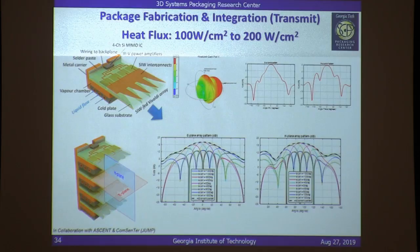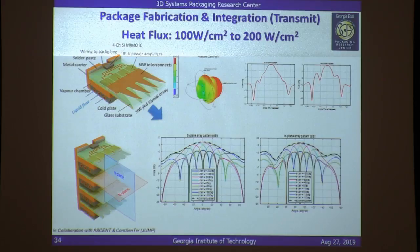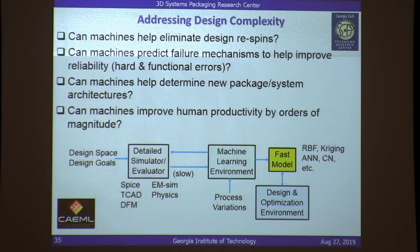Our grand vision is to build a module like this, stack these modules on top of each other along with antennas, to scan along both the H and E planes at a frequency of around 140 gigahertz — the D-band — using Vivaldi arrays all integrated into the glass substrate.